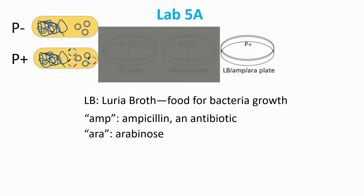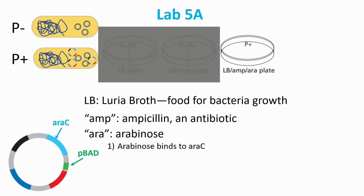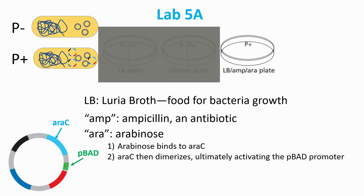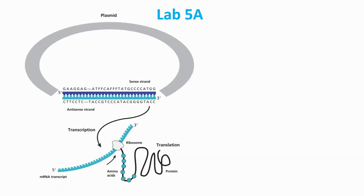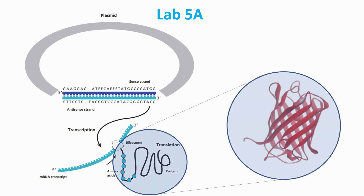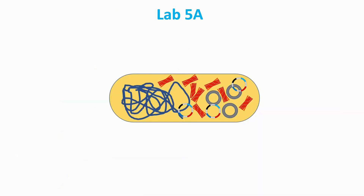For the third dish, we use only the P+ sample. Here we have luria broth, ampicillin, and a sugar called arabinose. The presence of arabinose sets off a chain reaction by binding to the AraC protein, which then dimerizes and activates the P-BAD promoter. This attracts RNA polymerase, and then transcription of the RFP gene begins. Arabinose ultimately leads to synthesis of the red fluorescent protein, which in turn should make the E. coli glow.